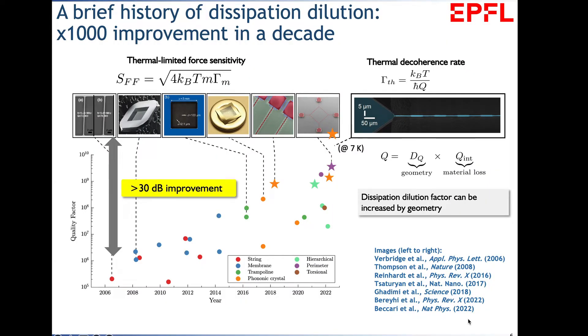A brief history of dissipation dilution. There's been quite astounding progress over the last 15 years. Spotted here is mechanical quality factor of thin film strained mechanical oscillators, starting with observations from Harris and Craighead on strained silicon nitride. Today we can have room temperature mechanical oscillators with very high yield quality factors of 3 billion. It's been a progress of more than 30 dB, a factor of 1,000.